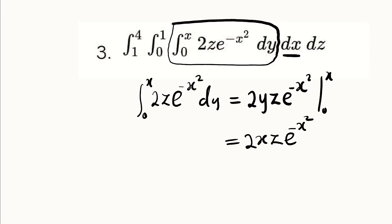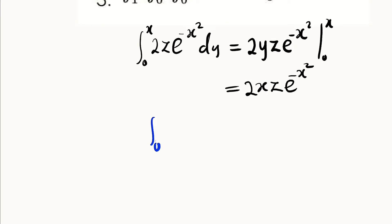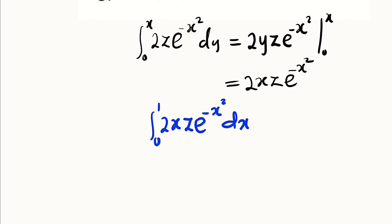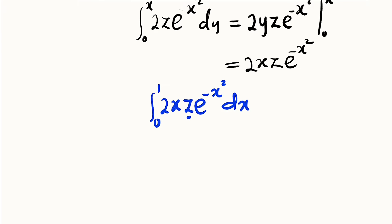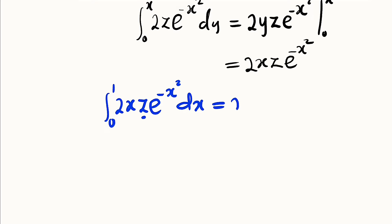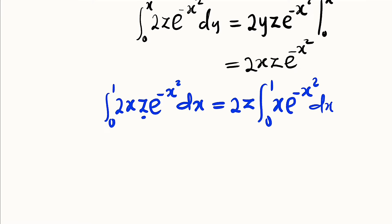We now integrate 2x·z·e^(-x²) with respect to x from 0 to 1. The only term we treat as constant is z, so we bring it out: 2z times the integral from 0 to 1 of x·e^(-x²) dx. Now let us integrate this function using u-substitution.